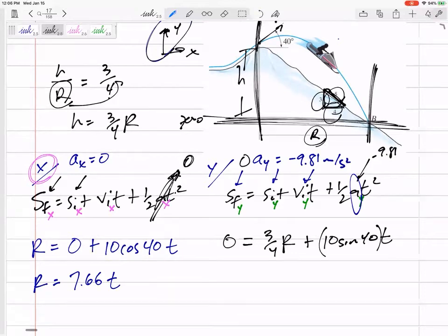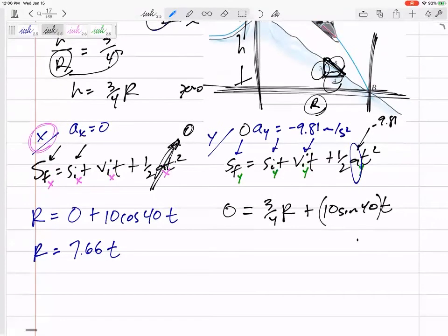Is this positive 10 sine 40? Yeah, because it launched upward. I gave a problem on a test where something started launching downward, and you'd need to put a negative if you're using my axes. I'd put a negative if it's launched downward. This one's launched upward, so that's plus.